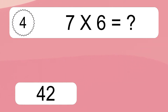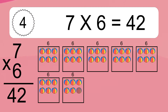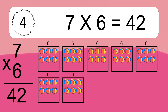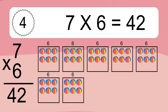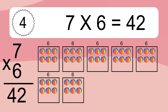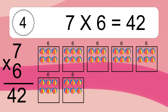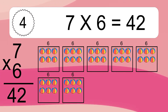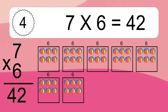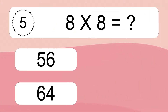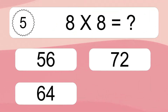7 times 6 equals what? 7 times 6 equals 42. We have 7 boxes, and each box has 6 colorful balls inside. If you count all the balls in all the boxes together, you will have 7 times 6 balls.